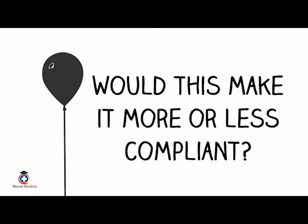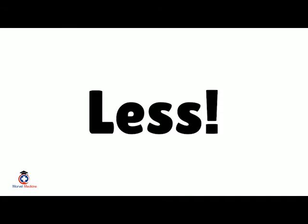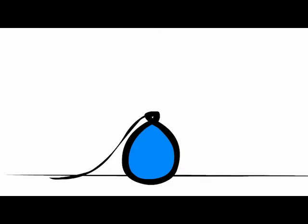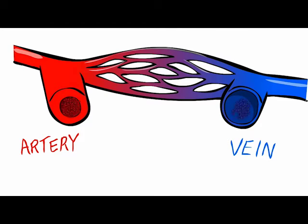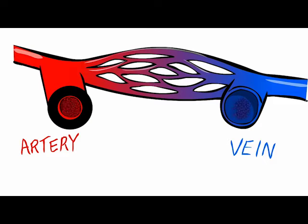Now imagine a balloon that is twice as thick in texture — would it be more or less compliant? Less. If you put the same 20 milliliters of water into it, the thicker balloon has a higher pressure inside. Apply this same concept to arteries and veins: histologically, arteries are thick and rubbery, while veins are thinner.